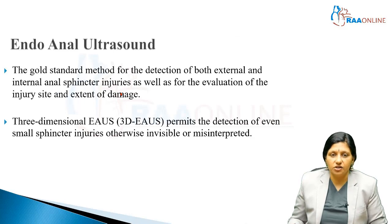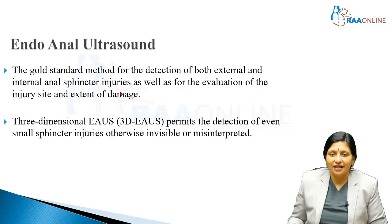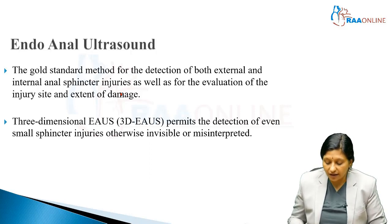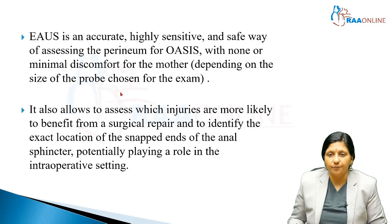Endoanal ultrasound is the gold standard method for detection of both the external and internal anal sphincters, as well as for the evaluation of injury site and extent of damage. The 3D endoanal ultrasound permits the detection of even small sphincter injuries which are otherwise invisible or misinterpreted on doing a per rectal examination. Endoanal ultrasound is an accurate, highly sensitive, and safe way of assessing the perineum for anal sphincter injury with none or minimal discomfort for the mother, depending on the size of the probe chosen.